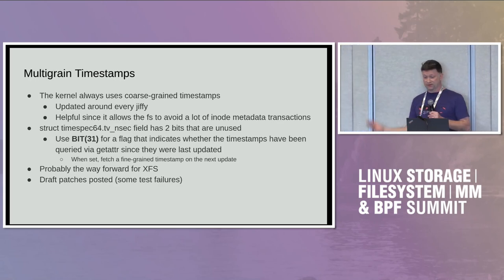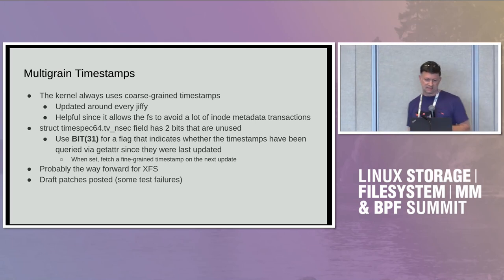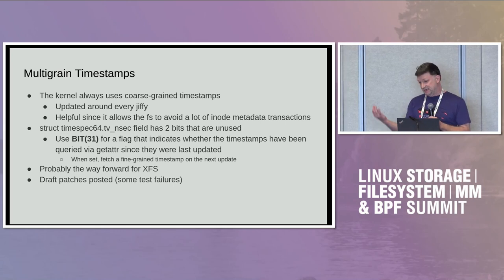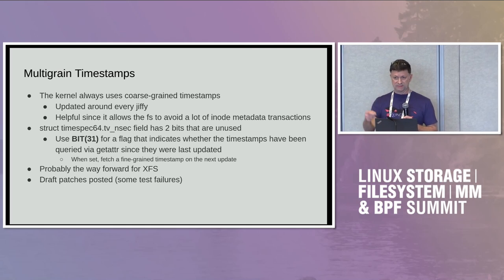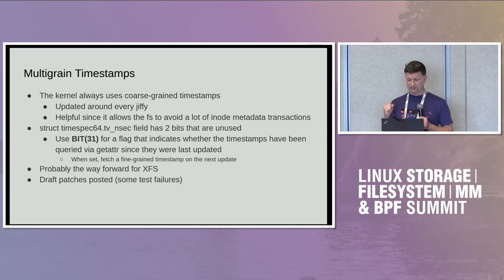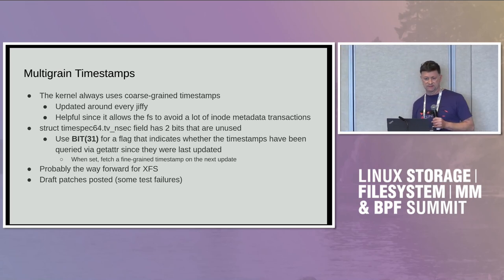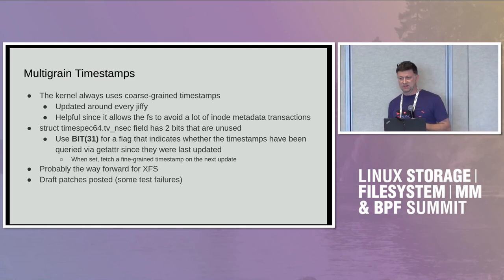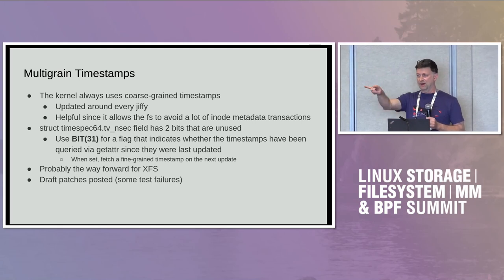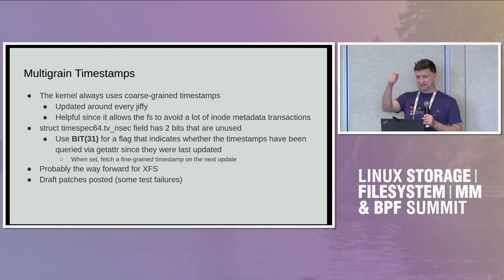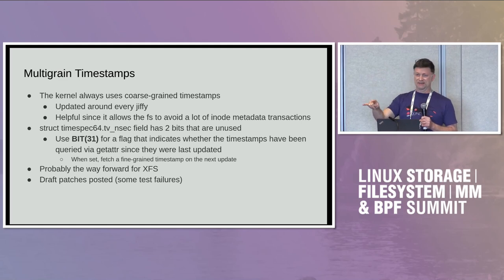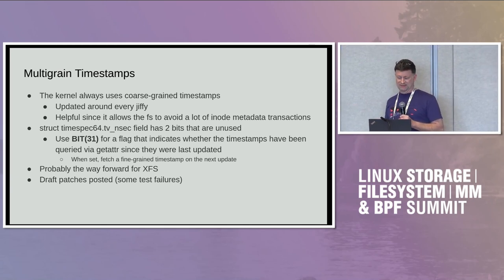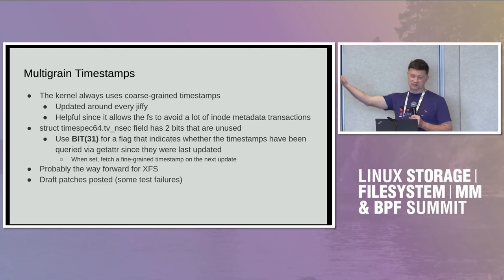An idea from Dave Chinner is to just use the ctime. We could use a similar scheme where we flag the ctime when someone queries it, and then know that on the next ctime update we need to do a fine-grained timestamp. I have some draft patches for this sent to the list a couple of times. I do see some test failures currently because some tests get a coarse-grained timestamp, do an operation, get another coarse-grained timestamp, and with these patches that last timestamp can look like it's before your operation finished. Those are really problems in the tests — they assume coarse-grained timestamps.